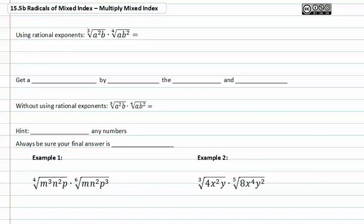When you have indexes that don't match, or mixed indexes, it's important to make sure that you can make them match before you multiply them together. Let's use the example with rational exponents: the third root of a squared times b, multiplied by the fourth root of a times b squared.